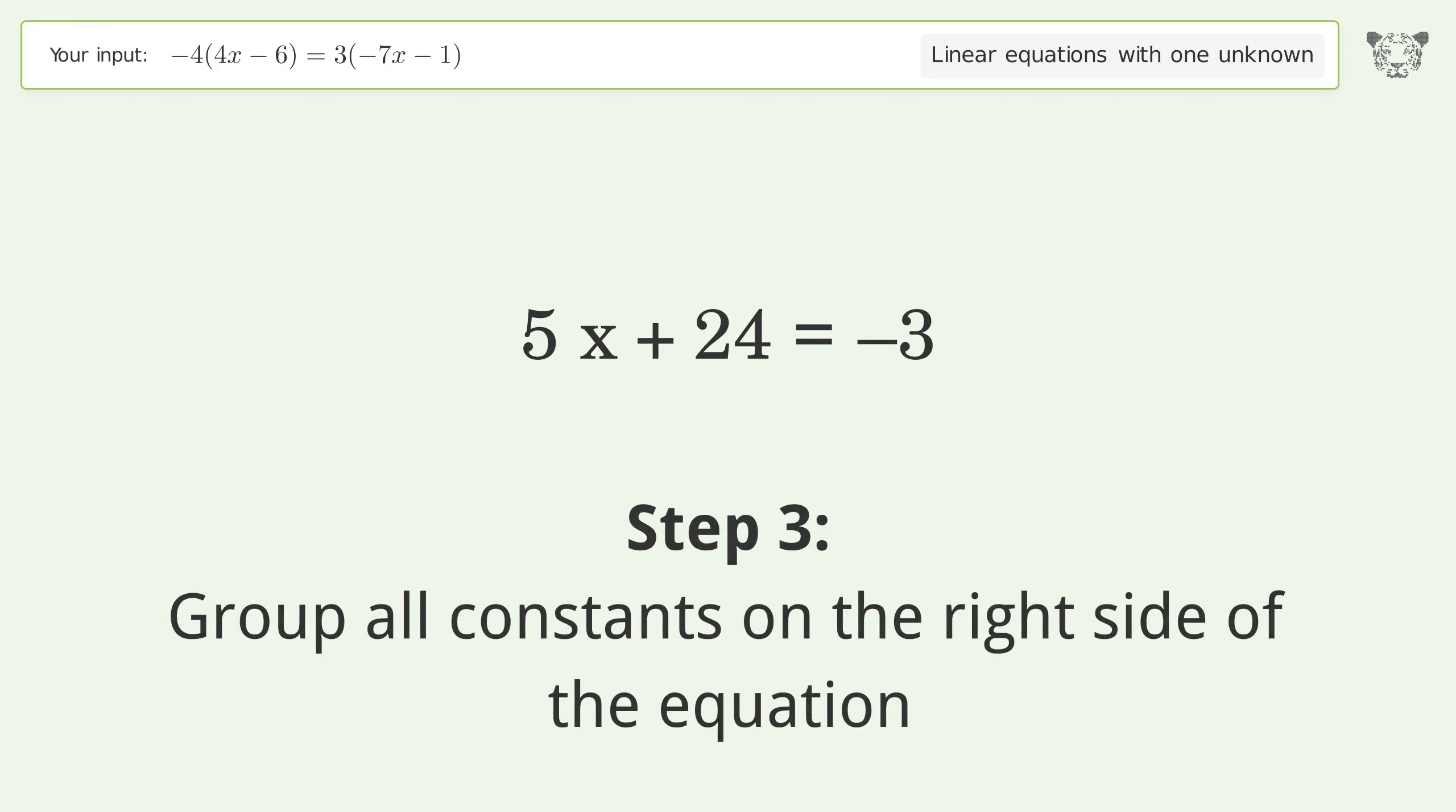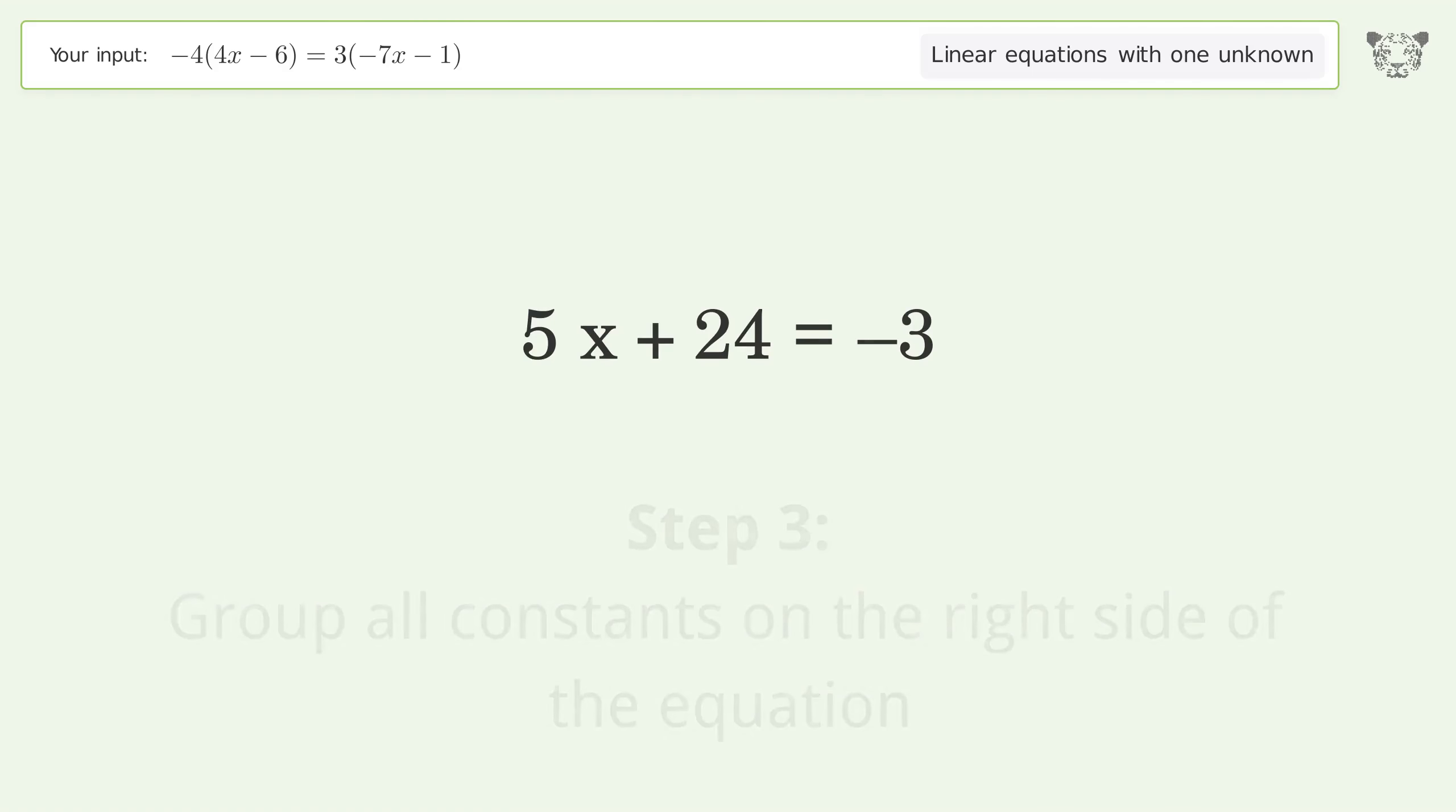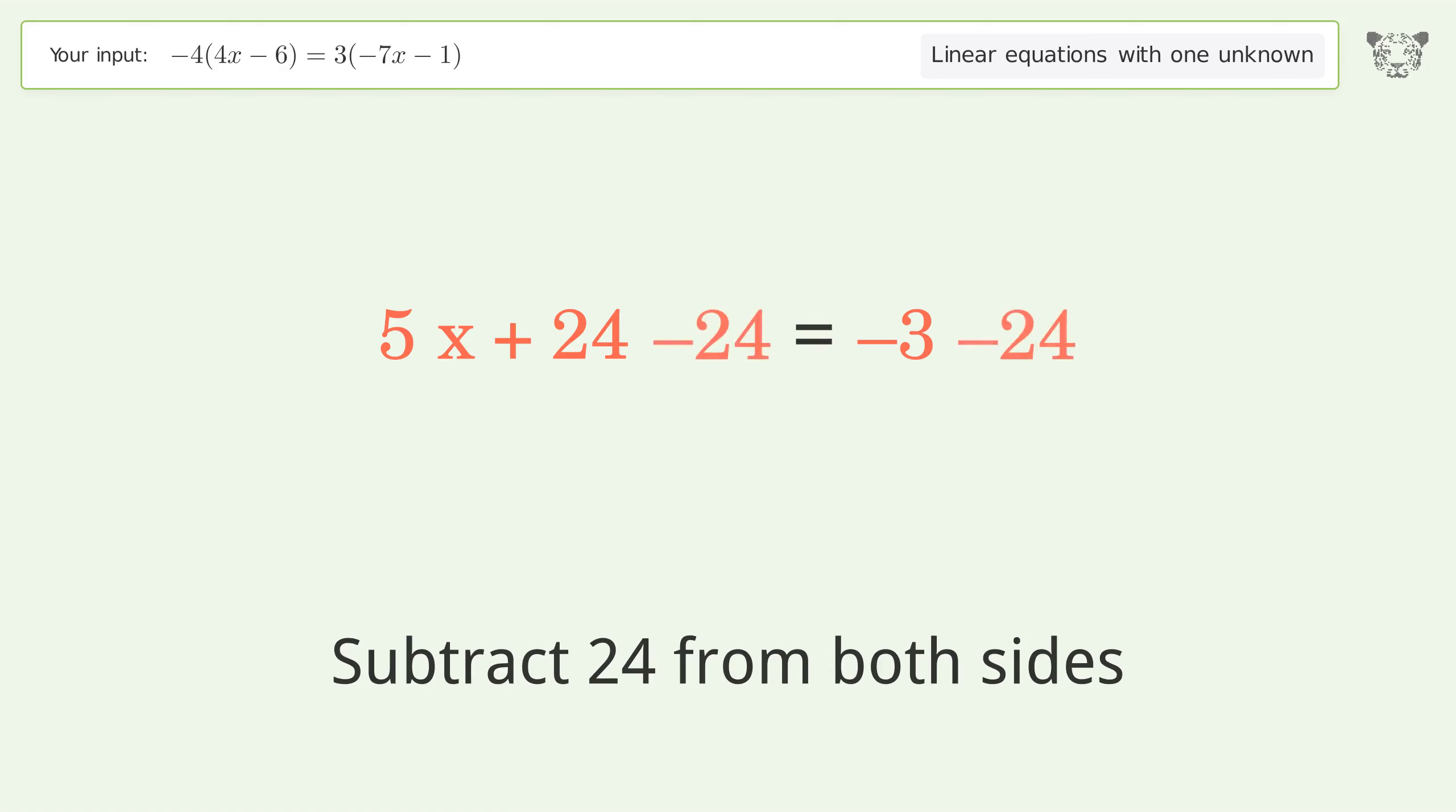Group all constants on the right side of the equation. Subtract 24 from both sides. Simplify the arithmetic.